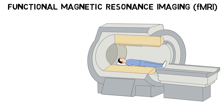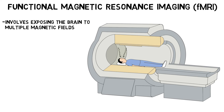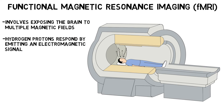Functional Magnetic Resonance Imaging, or fMRI, is a type of neuroimaging used to obtain images of brain activity. fMRI involves exposing the brain to multiple magnetic fields, and relies on the observation that protons in the nuclei of hydrogen atoms respond to this procedure by emitting an electromagnetic signal that can be detected by the fMRI scanner. The fMRI scanner is capable of determining some of the properties of the tissue the signal came from, and can use this information to reconstruct a high-resolution image of the brain.